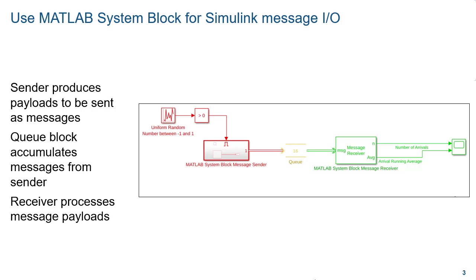The following example, 'Process Message Payload Using MATLAB System Block,' is currently available in R2021a Simulink documentation. This example demonstrates the basic functionality of the message input and output for the system block. In this example, a MATLAB system block is configured as a message sender. The block receives signal data and outputs messages that contain signal data as payload. Next, there is a queue block that sorts and stores messages until an event occurs and passes them on. Lastly, another MATLAB system block is configured as a message receiver. The block receives messages, processes the message payload, and outputs the processed data.